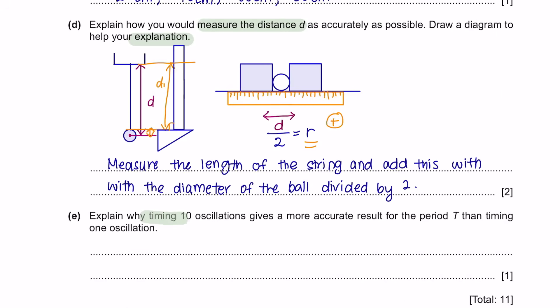Next, explain why timing 10 oscillations gives a more accurate result for the period T than timing 1 oscillation. Whenever given a question about accuracy, you should repeat your experiment and get the average, because this reduces the percentage of error and gives a more accurate reading.